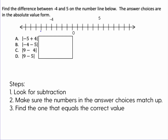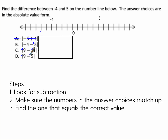Let's do two more examples similar to what you might see on the GED. Find the difference between negative four and five on the number line below; the answer choices are in absolute value form. Here's negative four, here's zero, and here's five. For the steps, you always want subtraction, so one answer choice is wrong right away. Make sure the numbers in the answer choices match — we need a negative four and a positive five. Only one answer choice has those, so already we can see the answer is going to be B.